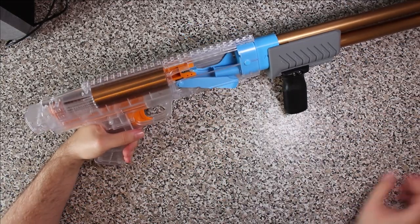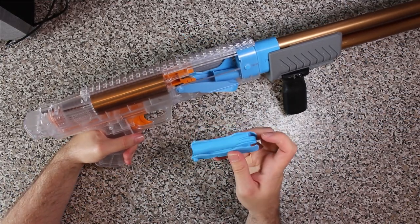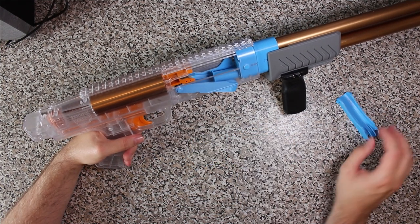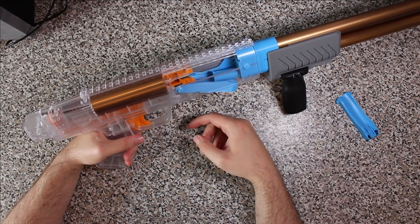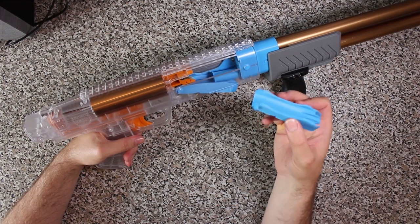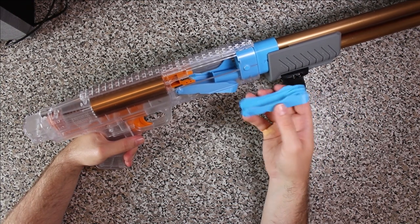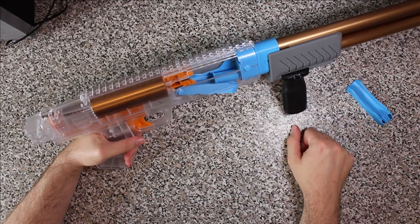Yeah I don't think you could beef up these feed lips anymore because it would block the shells actually coming out, which kind of means you do need this funny shape, which is unfortunate.